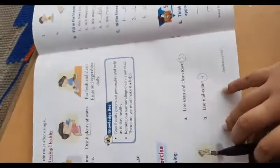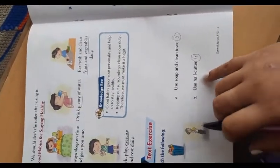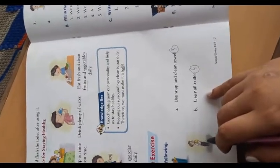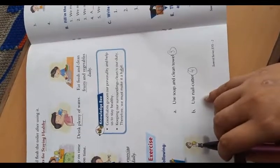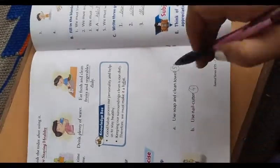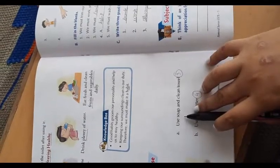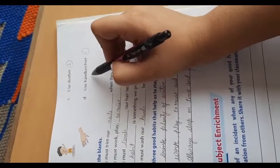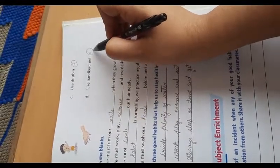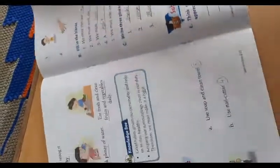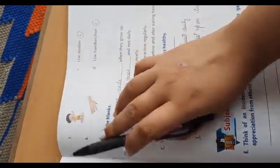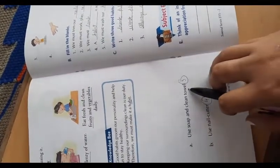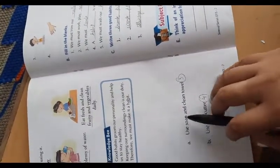Now look at the second picture. The boy has a handkerchief in their hand and he is using it, so not A, not B, not C, but D, use a handkerchief. So write here second one. Now see the third one, he is bathing, so he is using soap and a towel. So write here third.